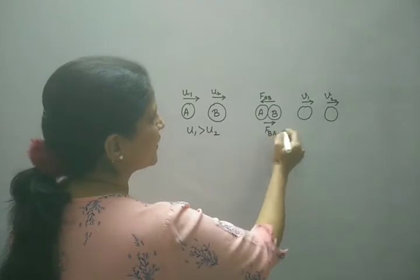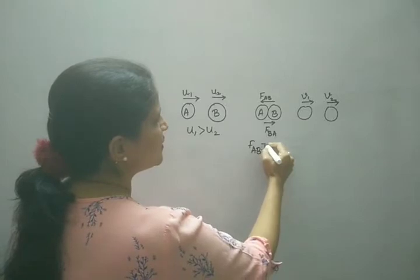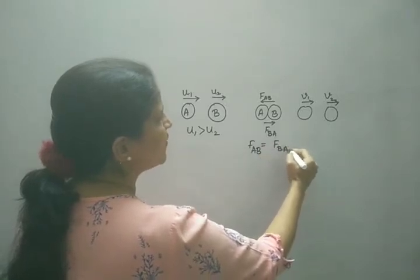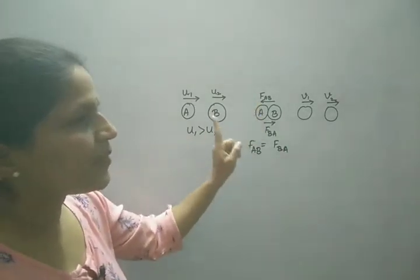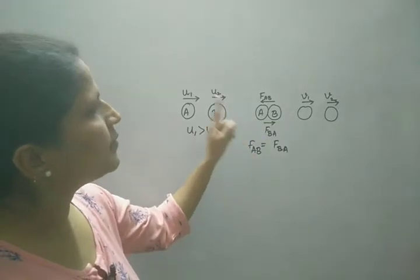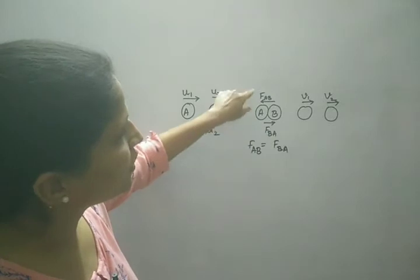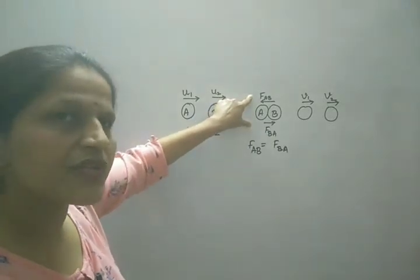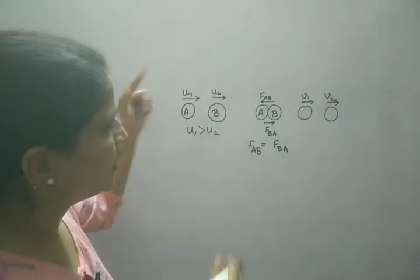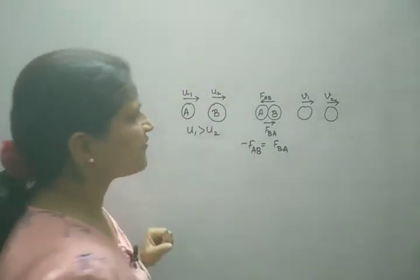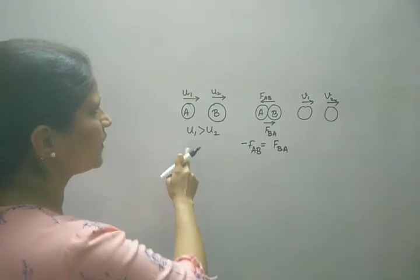This is force on A due to B and this is the direction of force on B due to A. According to the third law of motion, force on A due to B is equal to force on B due to A but opposite in direction. We can mark this as -F_AB = F_BA.